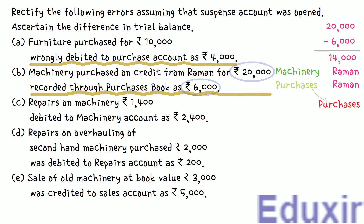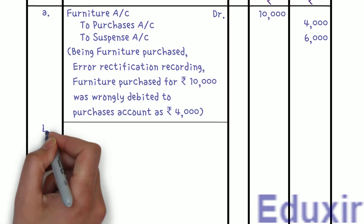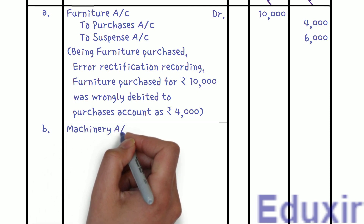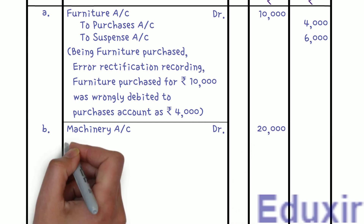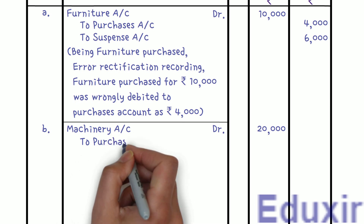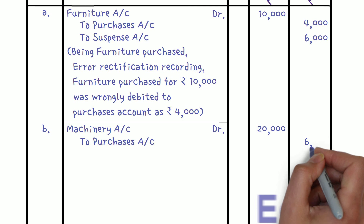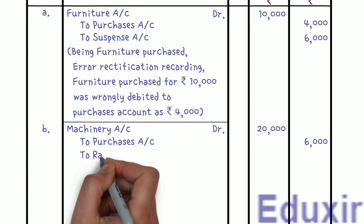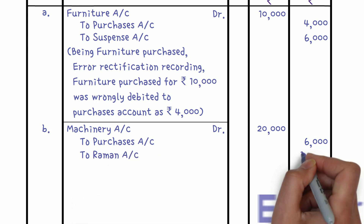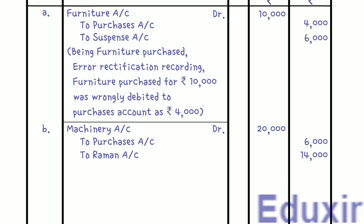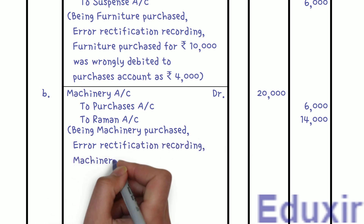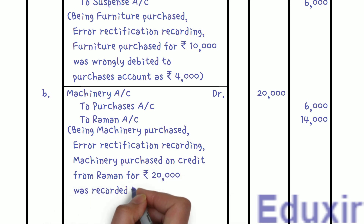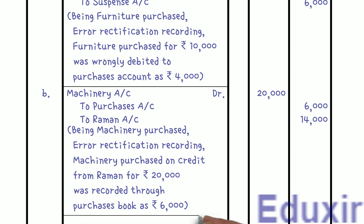Entry 2: Machinery Account Dr. 20,000 rupees; Purchases Account Cr. 6,000 rupees; Raman's Account Cr. 14,000 rupees. Narration: Machinery purchased on credit from Raman for 20,000 rupees was recorded through the purchases book as 6,000 rupees — Error Rectification Recording.